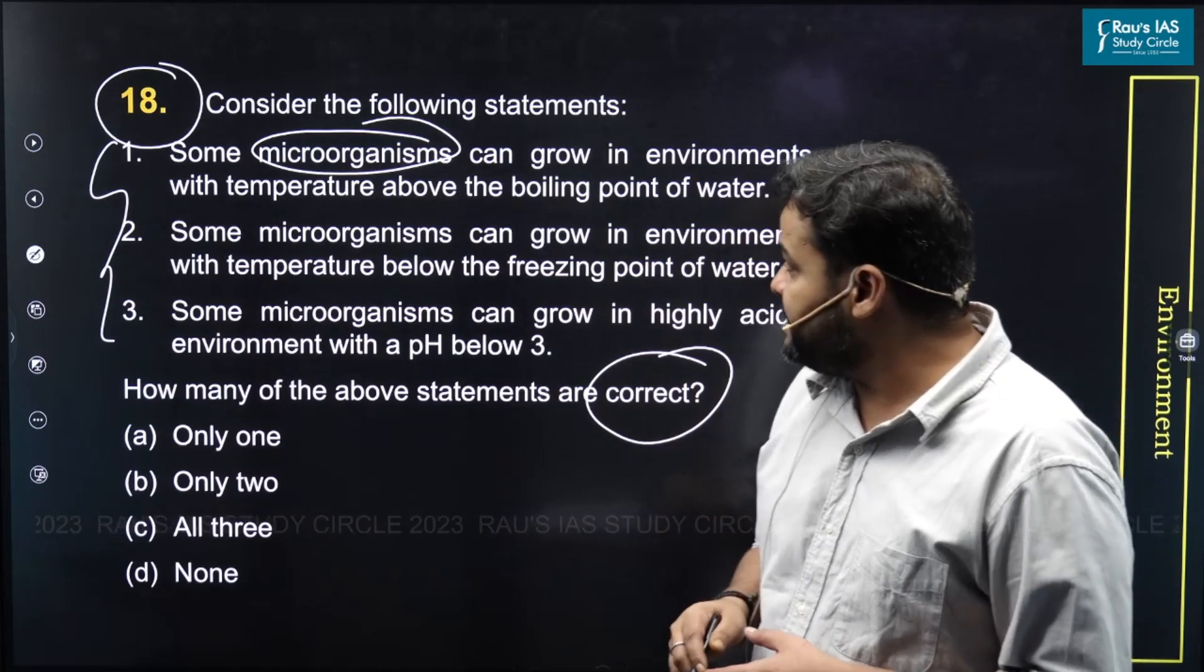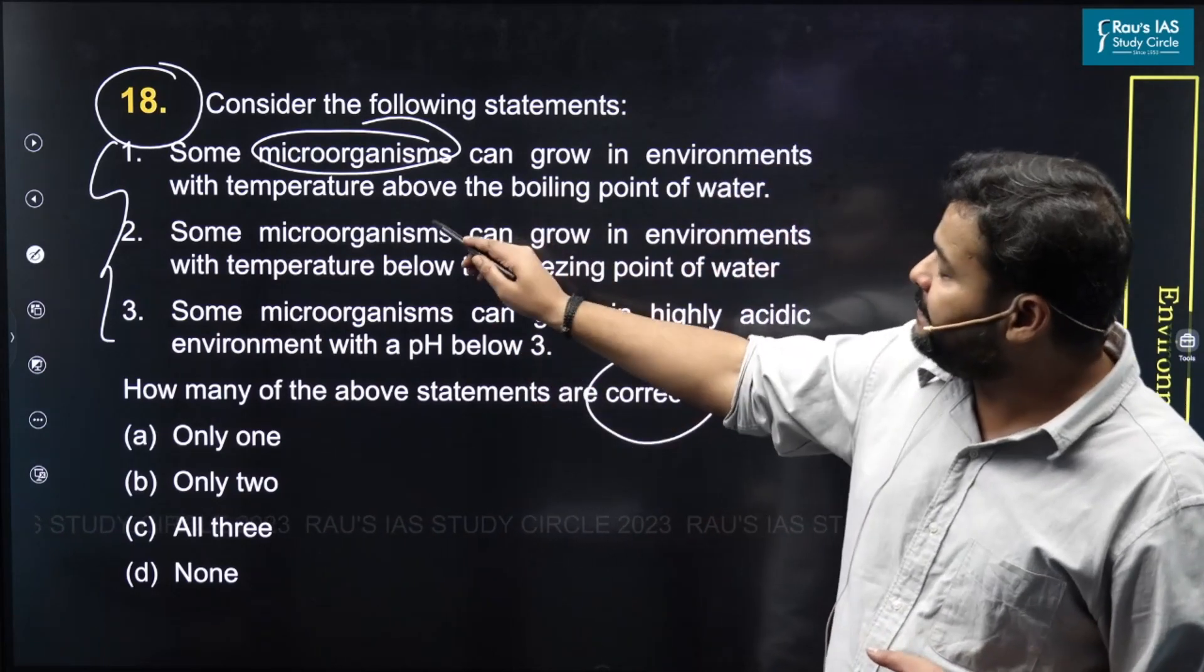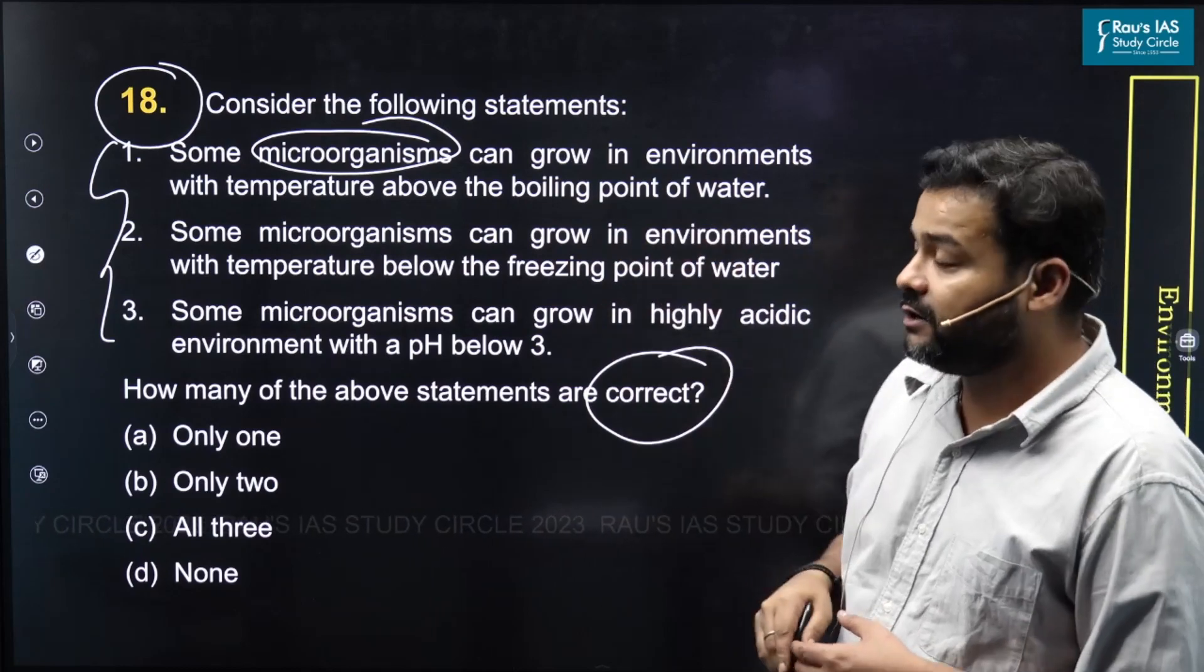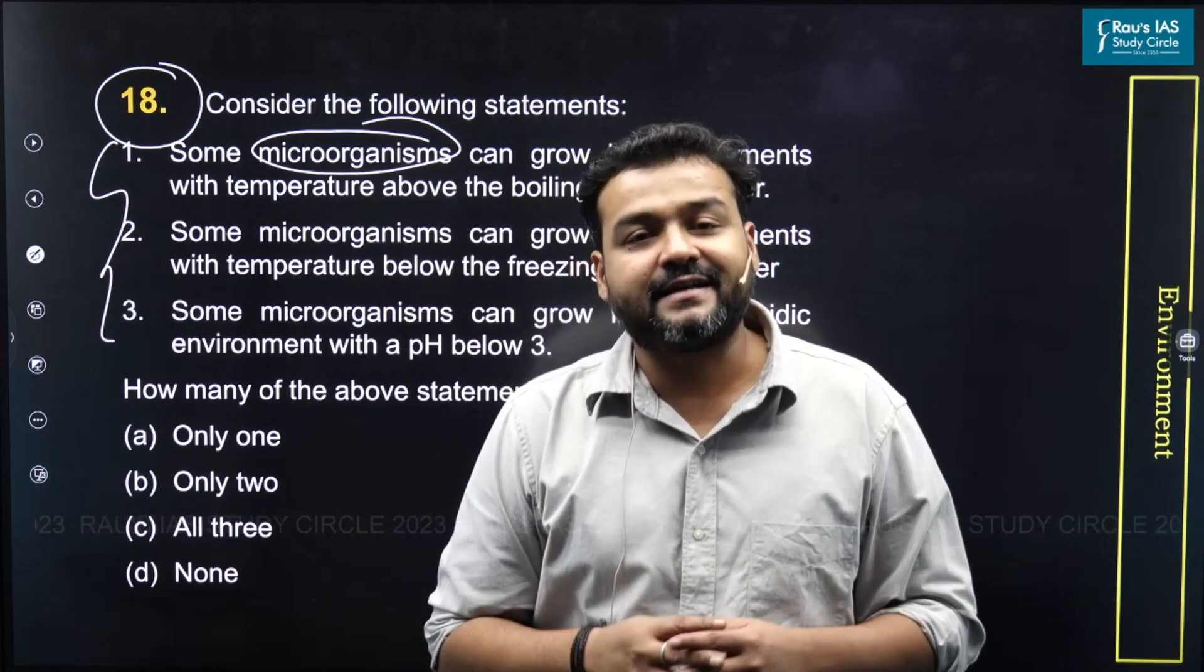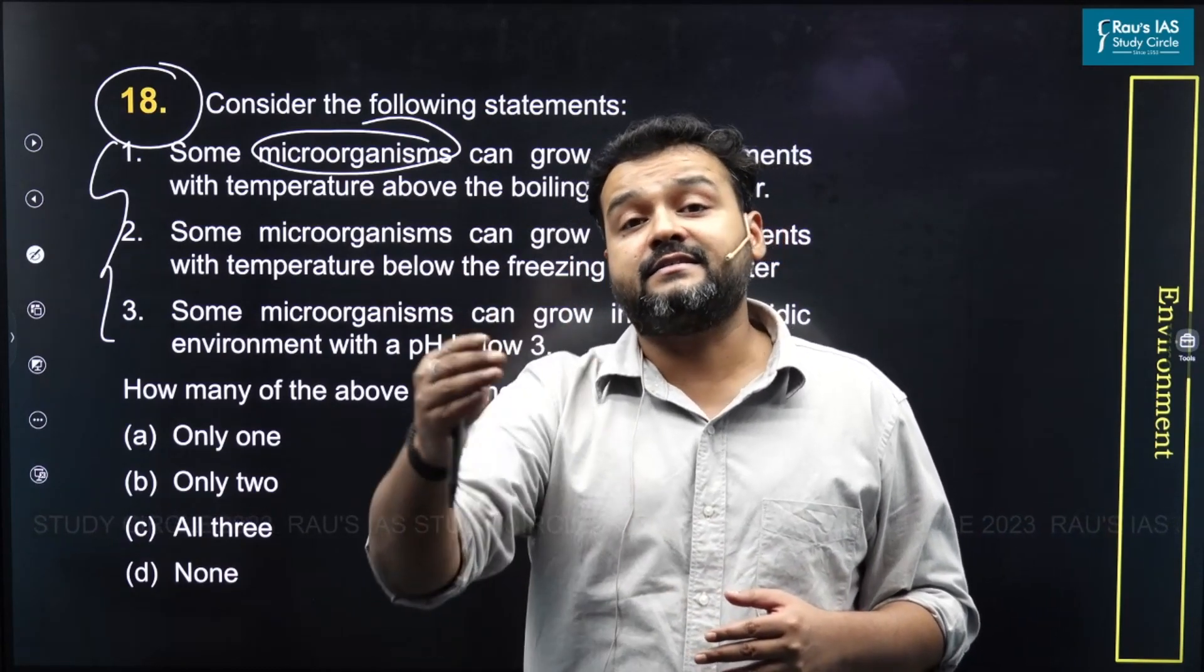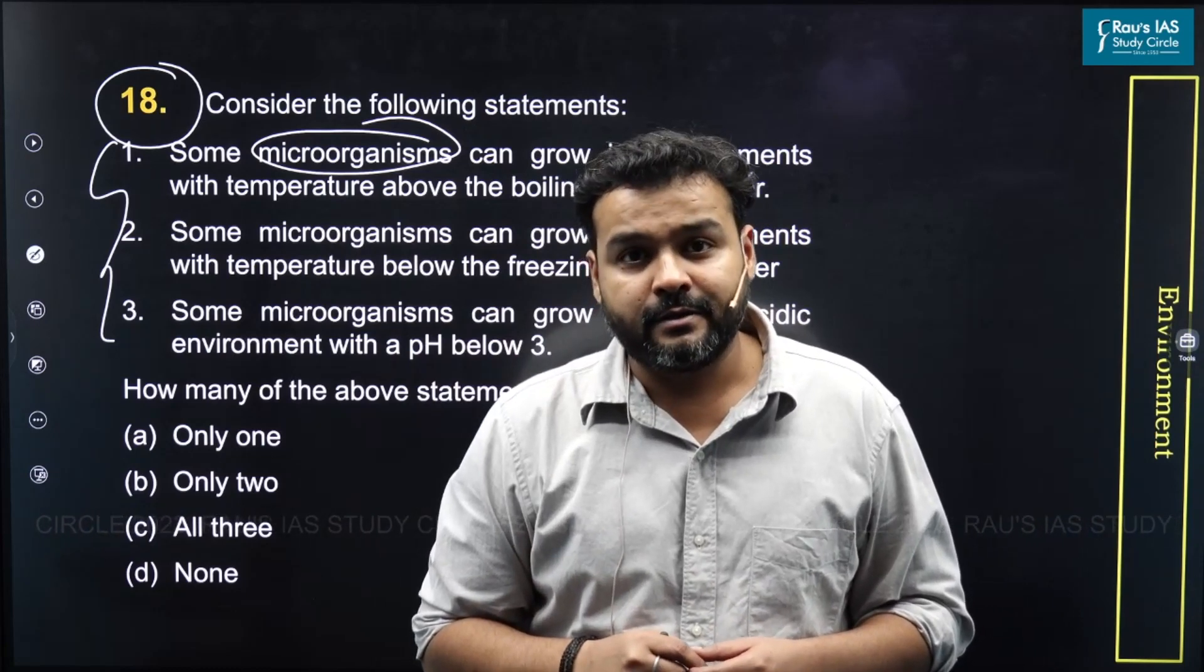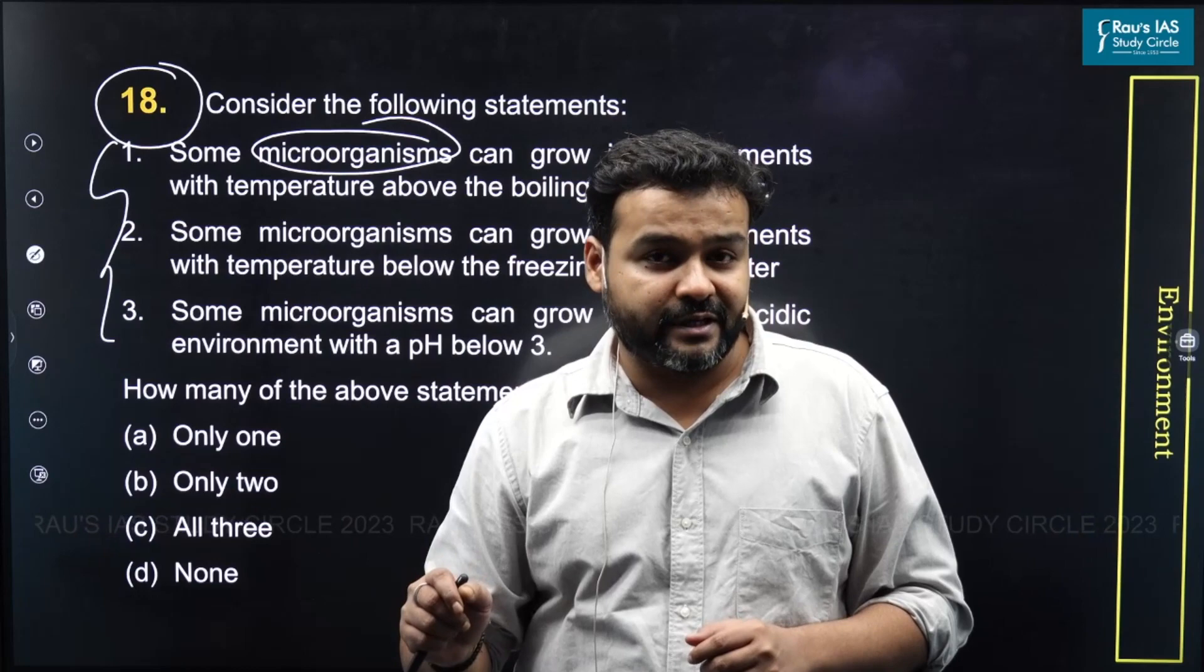Statement one says some microorganisms can grow in environments with temperature above the boiling point of water. This is a correct statement. Hyperthermophile is a category of organism which can survive in extremely high temperatures. Optimum temperature is 80 degrees Celsius for their survival.